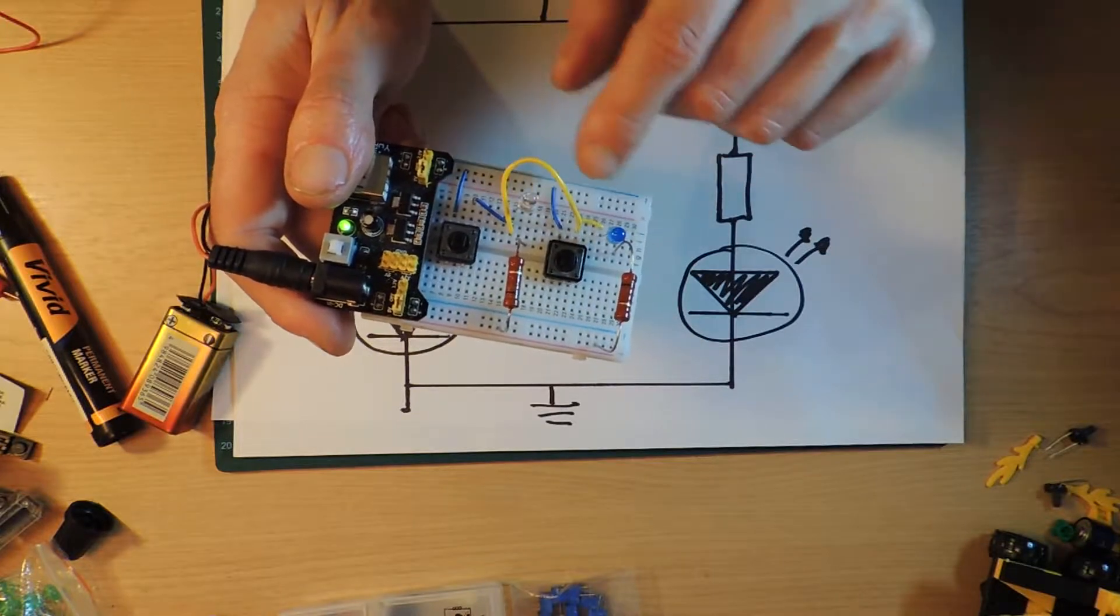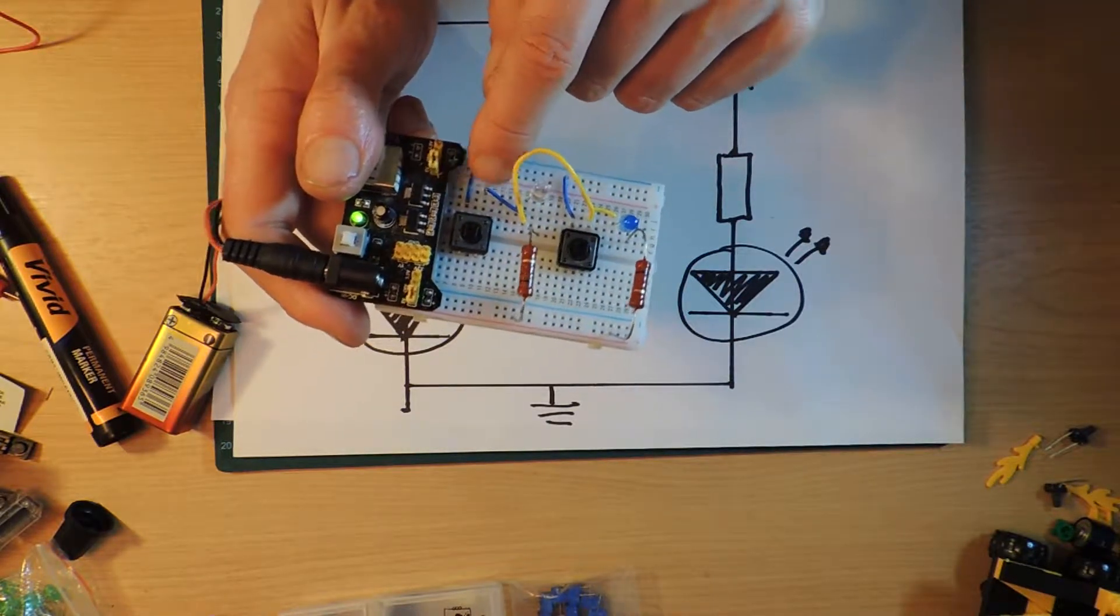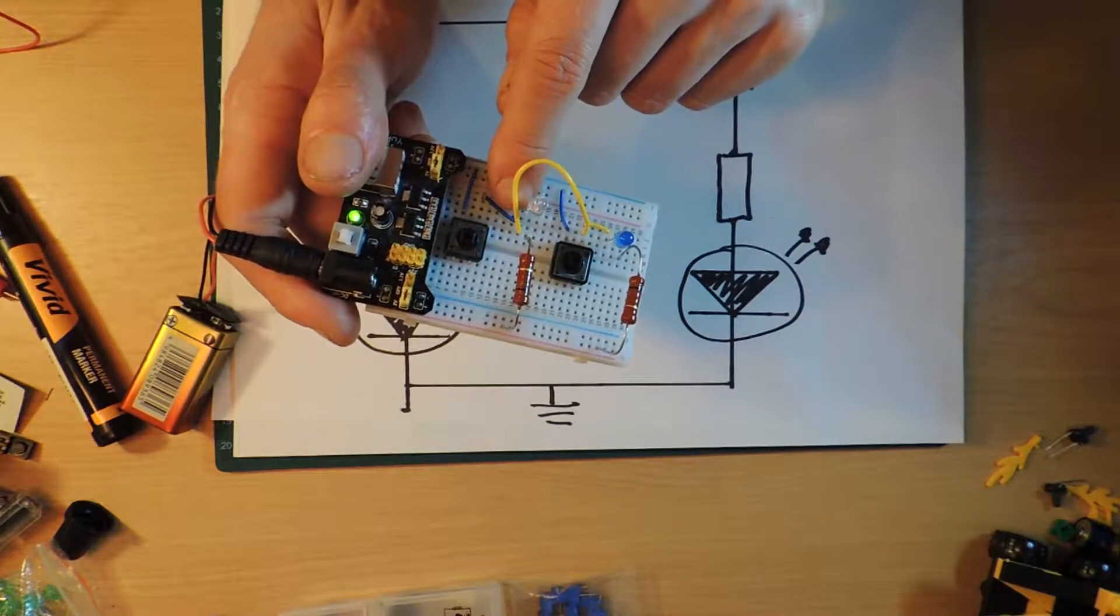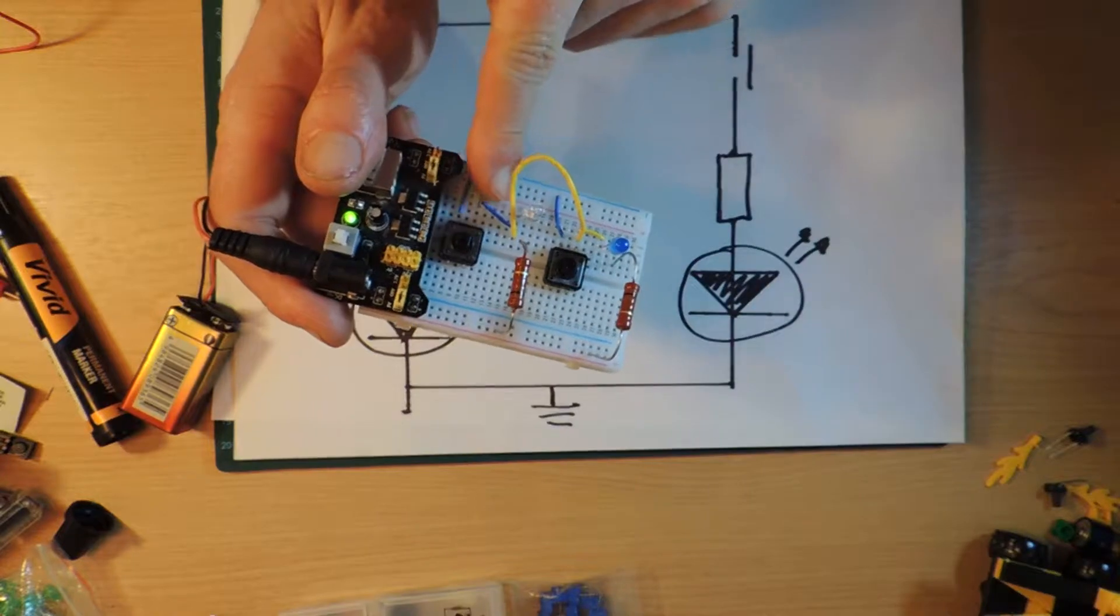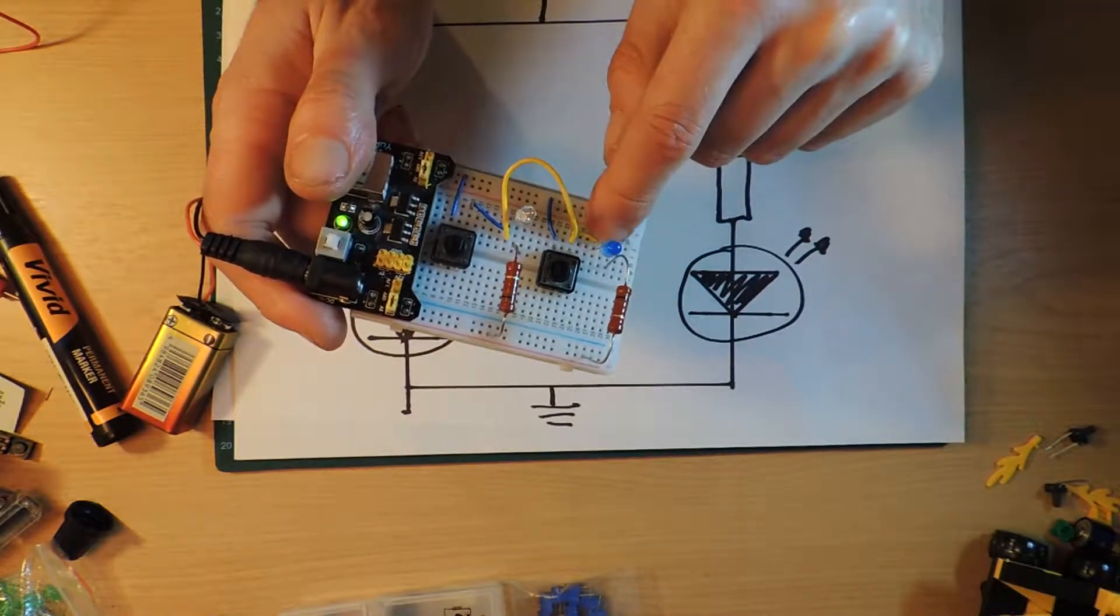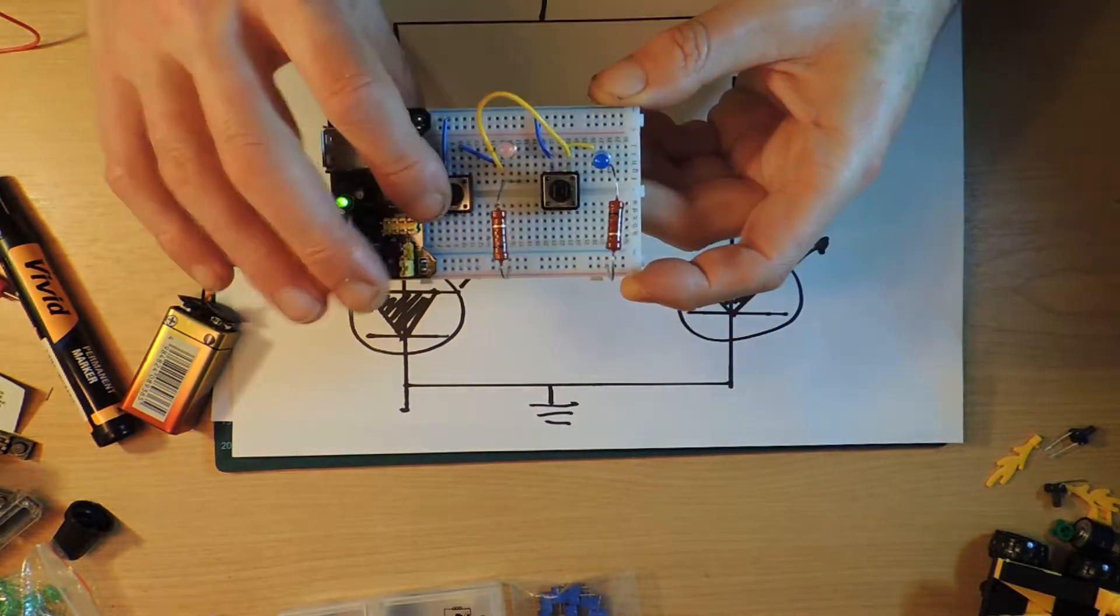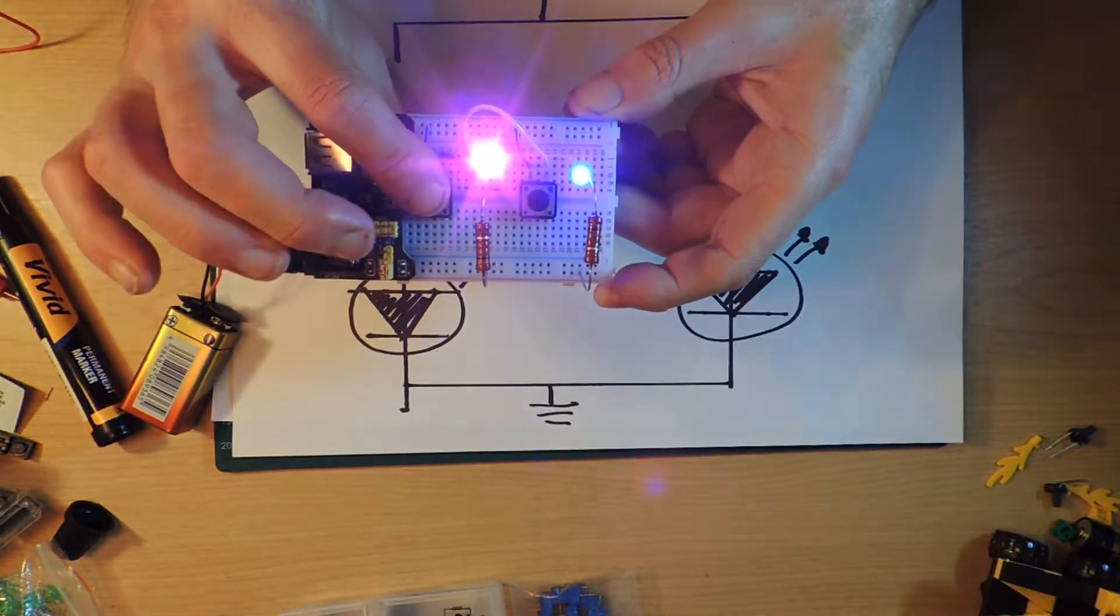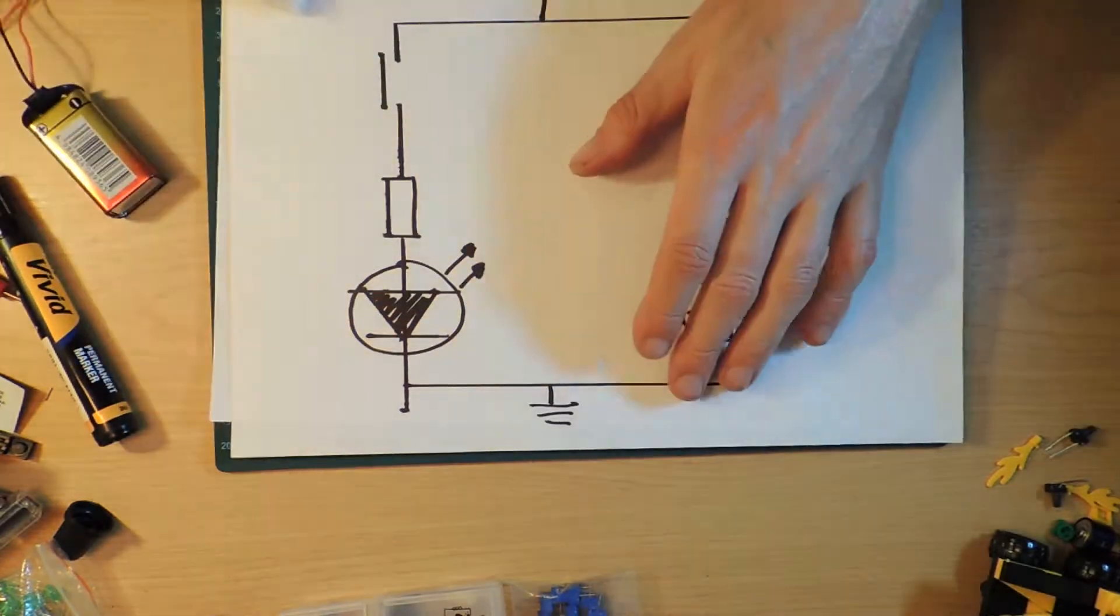So when I press this button, the current, pretend this is the positive, it goes in here through the button, down through this wire, and then through the LED over to there, but also splits off and goes into here, and then goes into this LED, and through to there. So if I press this on, I do in fact get two lights on, and when I press this one, I also get two lights, and that's not what I wanted.